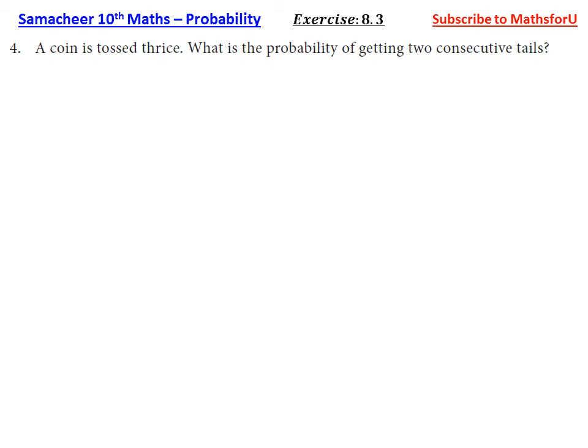A coin is tossed thrice. What is the probability of getting two consecutive tails? A coin is tossed thrice, that is one coin tossed three times. When you want consecutive tails, what is the probability of getting two consecutive tails? That is we want tail-tail continuously, the same thing.